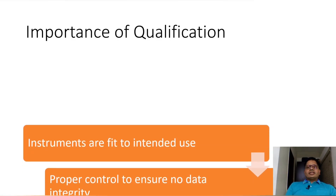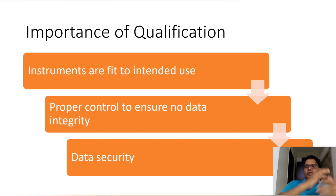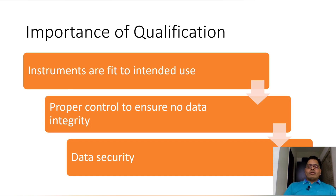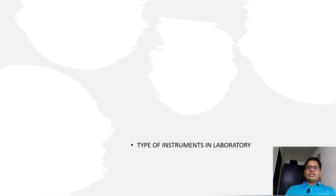The importance of instrument qualification: instruments must be fit for intended use — meaning the purpose for which we procured the instrument. There must be proper control to ensure no data integrity issues. During qualification of all computer systems, we check proper controls to ensure data integrity and data security — that the data generated in the instrument is safe. These three points are very important for qualification.